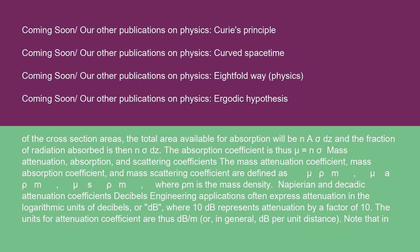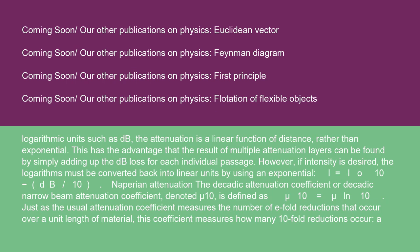Napierian and decatic attenuation coefficients: engineering applications often express attenuation in the logarithmic units of decibels (dB), where 10 dB represents attenuation by a factor of 10. The units for attenuation coefficient are thus dB/m, or in general dB per unit distance. Note that in logarithmic units such as dB, the attenuation is a linear function of distance rather than exponential. This has the advantage that the result of multiple attenuation layers can be found by simply adding up the dB loss for each individual passage.